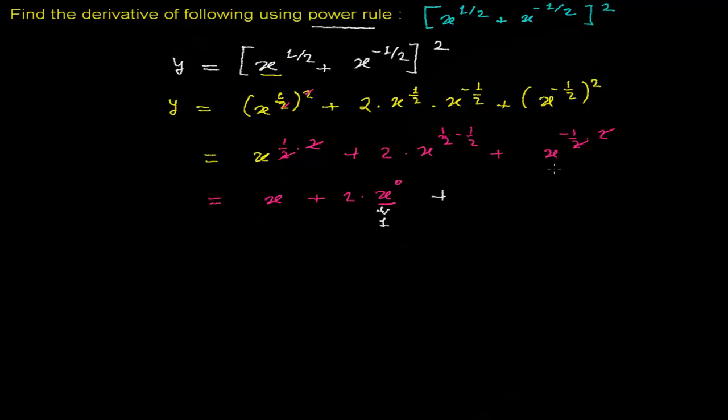And then plus we are left with x to the power minus 1. So let me arrange it and write it: my function is going to be now x plus x to the power minus 1 plus 2.